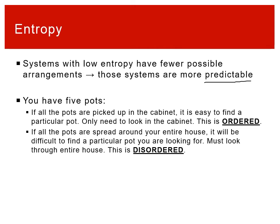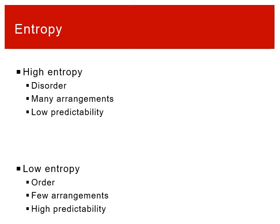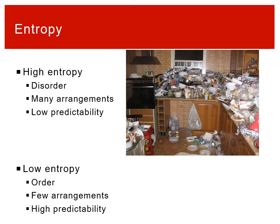Think about five pots: if you put all the pots away in the cabinet, it's easy to find a particular one because you only need to look in the cabinet. That is an ordered system. But if your pots are strewn about your entire house, it's very hard to find a particular one — you have more places to look. The less predictable a system is, the more disorder there is inherently in it.